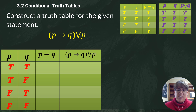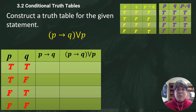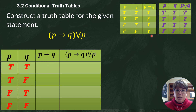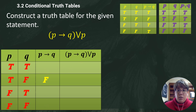Here's an example from your homework: construct a truth table for the given statement. This one is if p then q, OR p — so it involves the if-then truth table. We've already filled in our p's and q's. Now we'll do p → q first, so I come over to the if-then chart and copy that column: it's false only in the second row (true, false); every other time it's true.